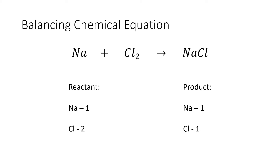To balance the number of chlorine, we put a coefficient of 2 before sodium chloride, so there will be two particles of chlorine on the product side. Since we added 2, it also affects the number of sodium on the product side, making sodium balanced as well. We also put 2 on the reactant side, giving us two sodium and two chlorine on both sides. The chemical equation is now balanced.